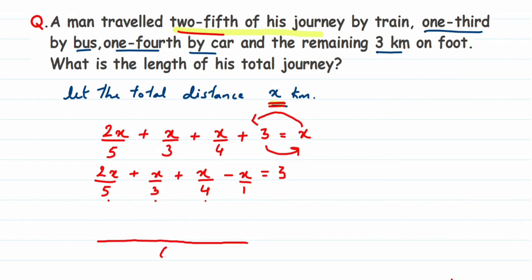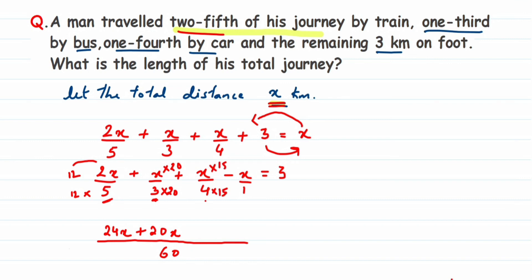Using LCM 60 as the common denominator: for 2x/5, multiply by 12 to get 24x; for x/3, multiply by 20 to get 20x; for x/4, multiply by 15 to get 15x; and for x/1, multiply by 60 to get 60x. So we have (24x + 20x + 15x − 60x) / 60.